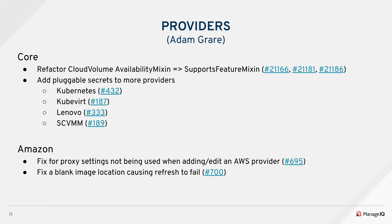For Amazon, we fixed a bug where proxy settings were not being used. This was broken since we added the DDF forms and the new class validate methods. Now you should be able to use a proxy server when adding and editing an AWS provider. We also fixed a bug where if you pushed a custom image to Amazon and it didn't have a location, the whole refresh would fail, so we fixed that one up.